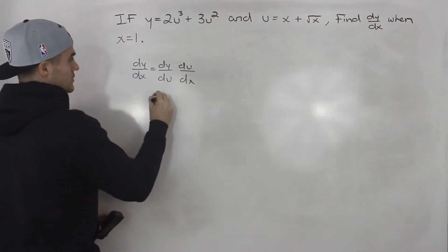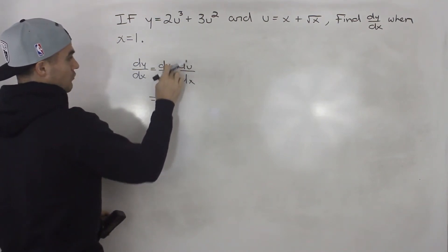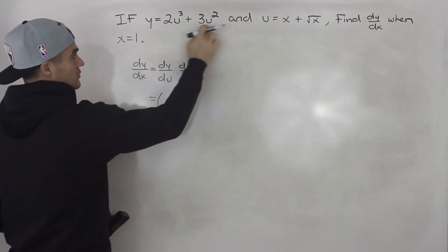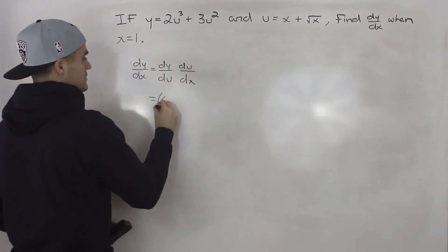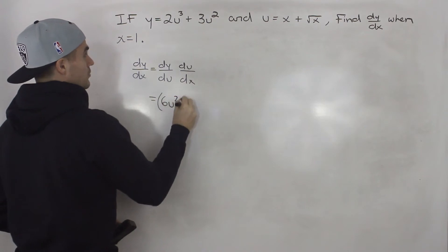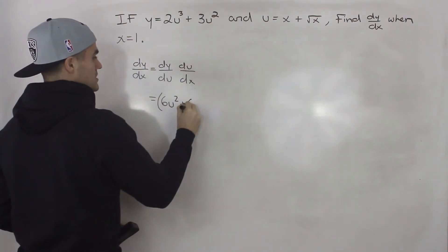So what we got to do is we got to find the derivative of y in terms of u. So taking the derivative of this function, bring the 3 down, we'd have 6u squared plus bring the 2 down, 6u.